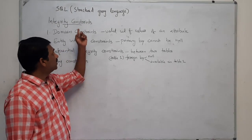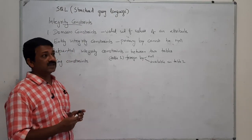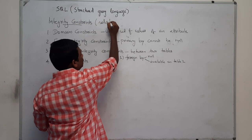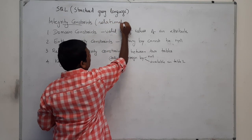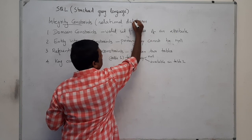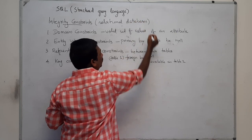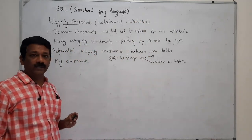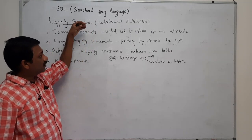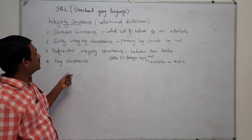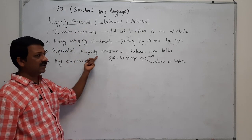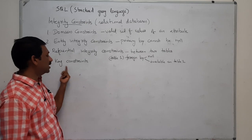We are going to discuss integrity constraints as far as relational databases are concerned. We are classifying these as domain constraints, entity integrity constraints, referential integrity constraints, and key constraints.